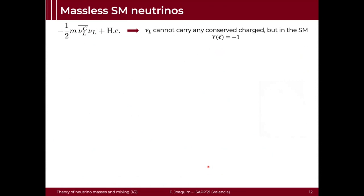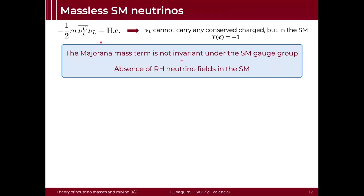The problem with this Majorana neutrino mass is that it's not invariant under the standard model gauge symmetry. A very simple way to see that is that neutrinos are in doublets which have hypercharge minus one, and this term is not invariant under U(1) hypercharge. Also, since the nu_Ls are in a doublet, the term nu_L nu_L transforms as a triplet under SU(2). So you cannot actually write this mass term when constructing the standard model.